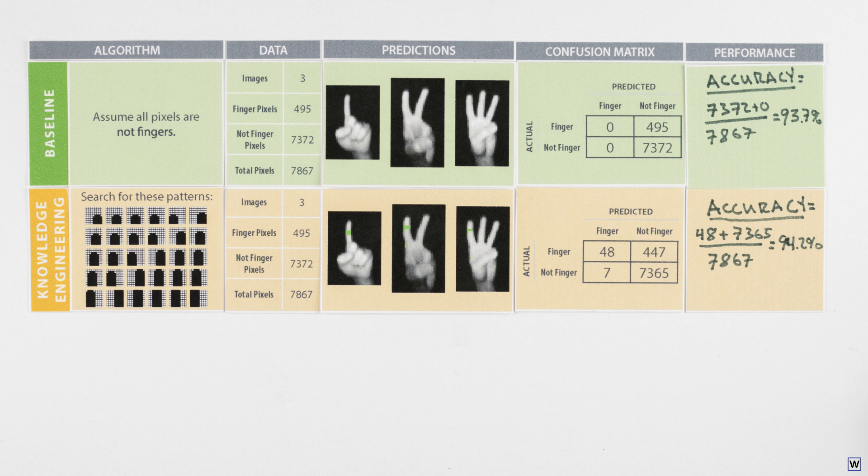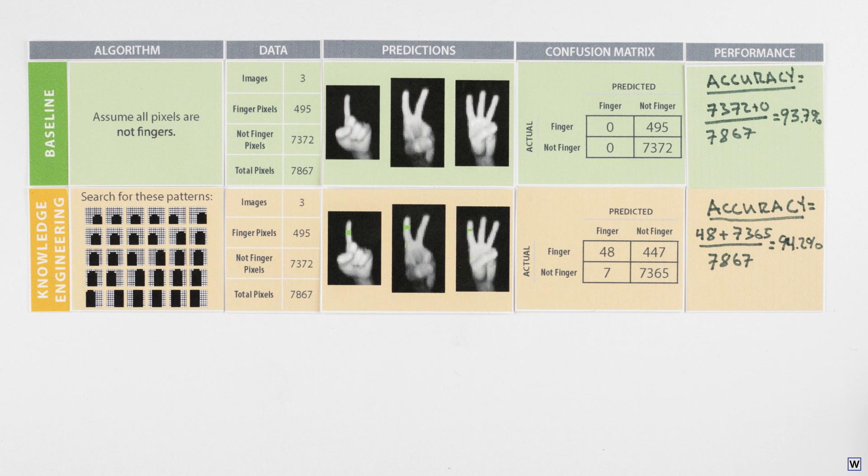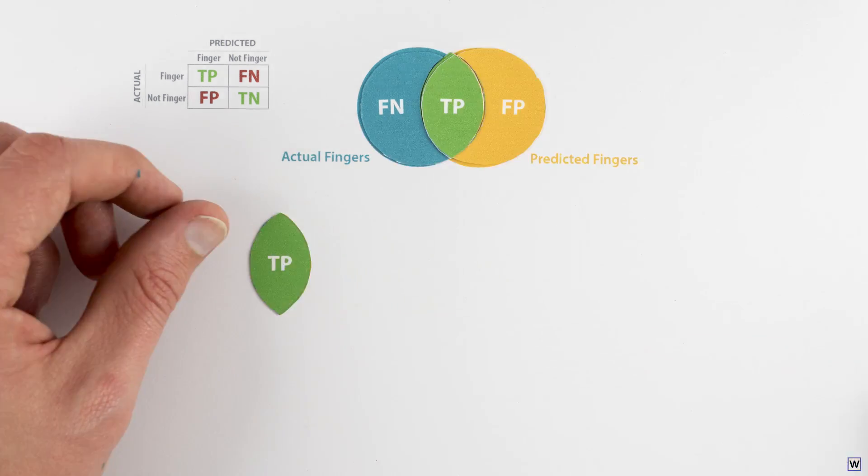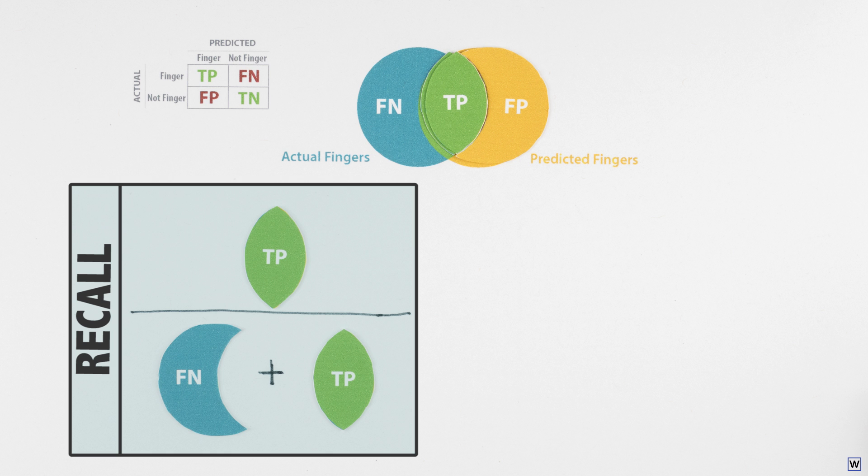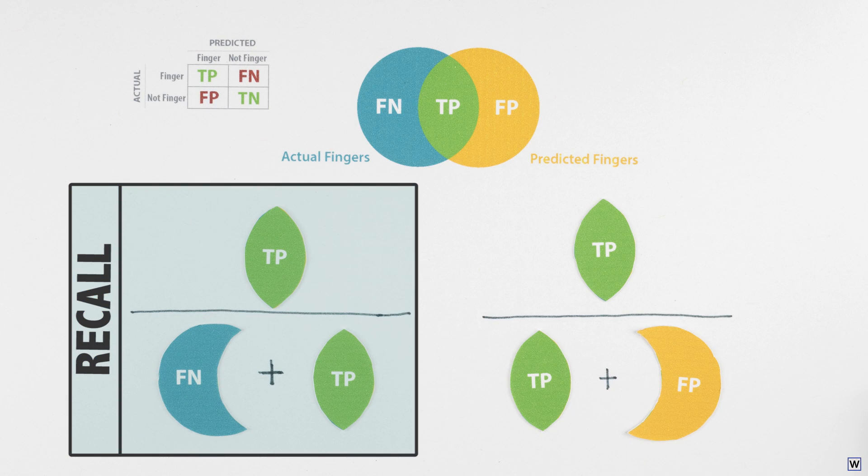Clearly, our choice of performance metrics matters. And what we need here are some better metrics. We'll use a popular pair of metrics that will give us a far more nuanced indication of how our algorithm is doing: recall and precision. In our case, recall is the portion of all finger pixels correctly identified, and precision is the portion of all finger predictions that are correct.